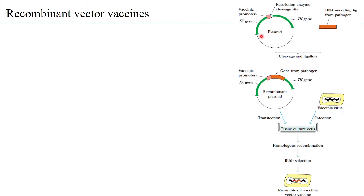To illustrate recombinant vector vaccines, consider using the vaccinia virus as the vector. A plasmid contains a thymidine kinase gene, which is also present in the vaccinia virus, allowing homologous recombination. Within the thymidine kinase gene there is a vaccinia promoter and a restriction endonuclease cleavage site. At this point, the DNA encoding the antigen from the pathogen can be inserted, creating a recombinant plasmid.